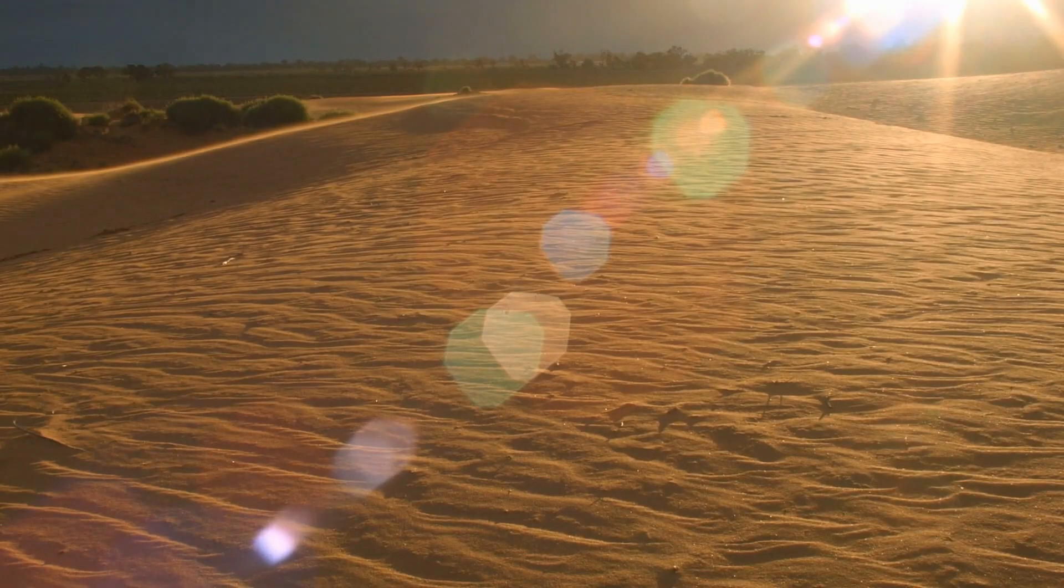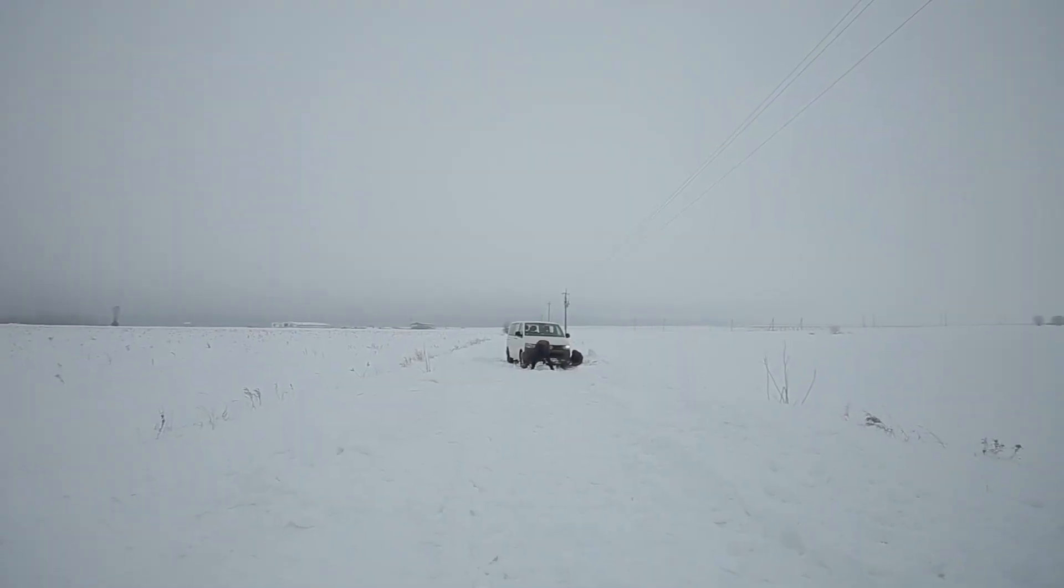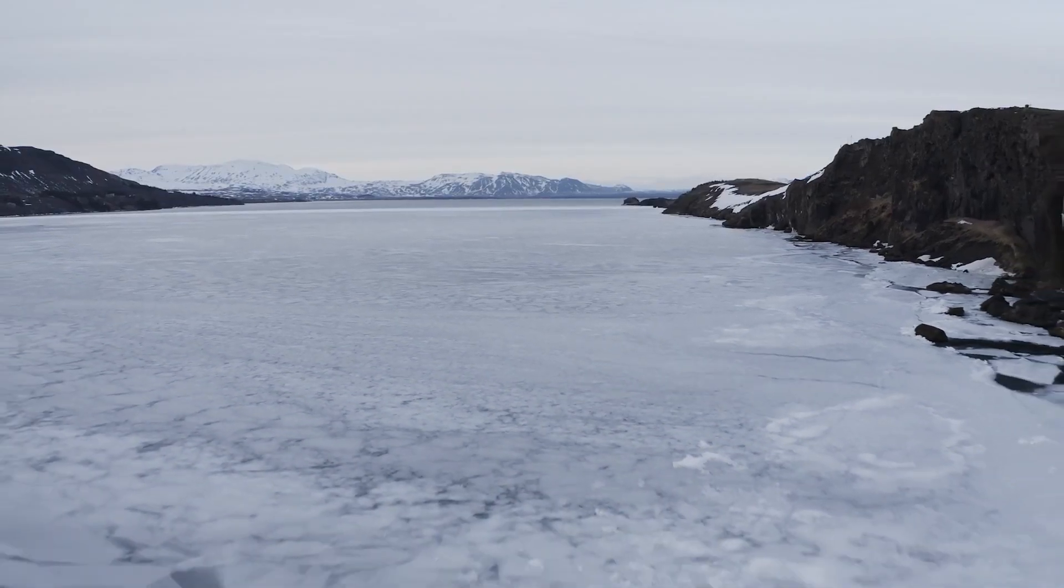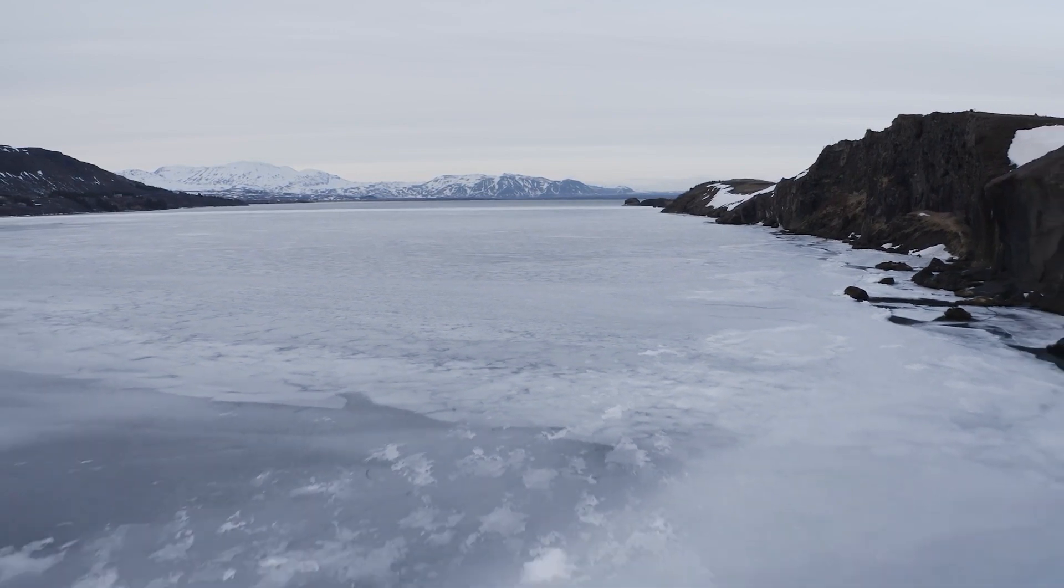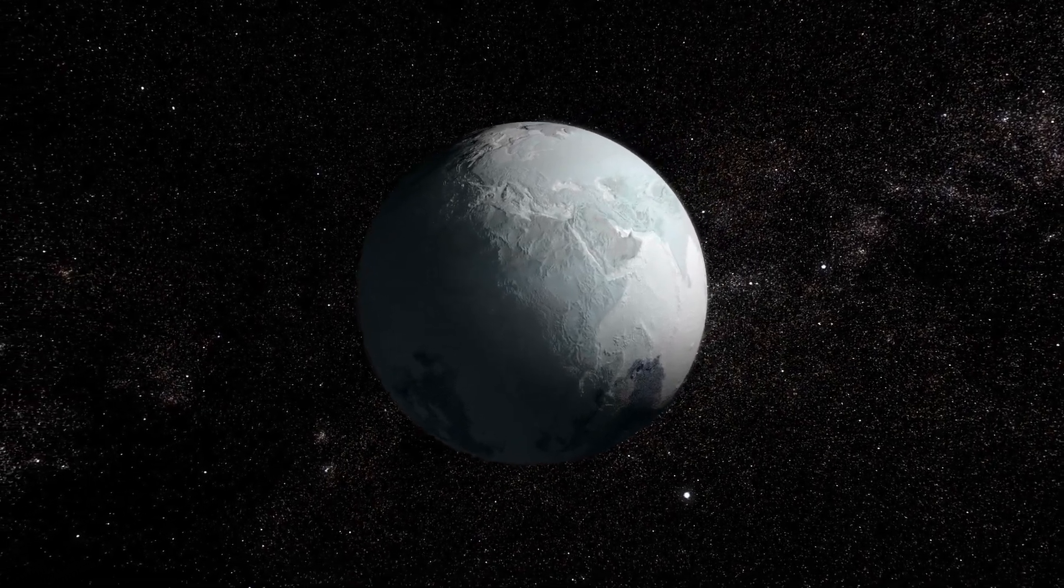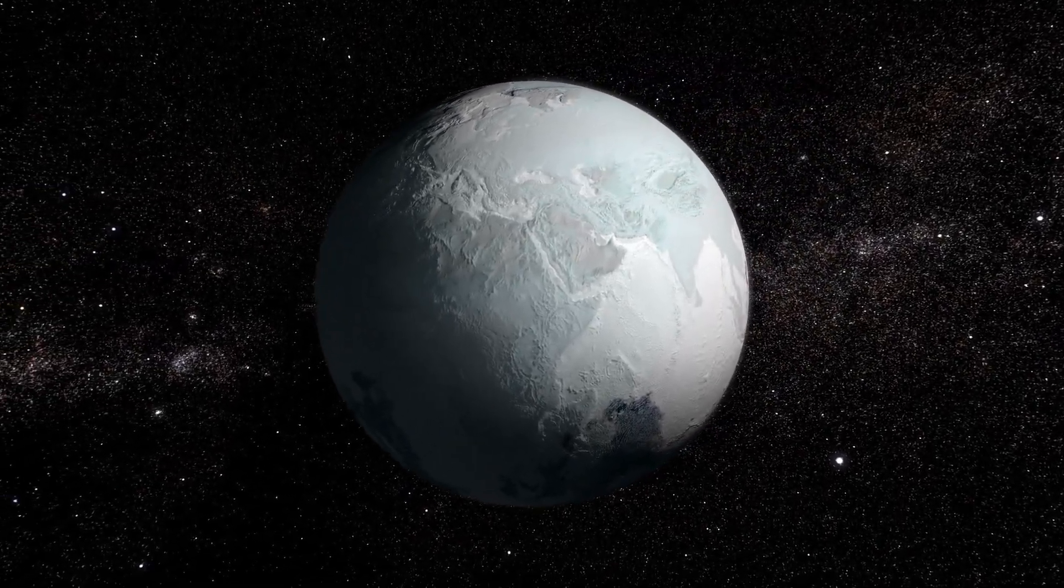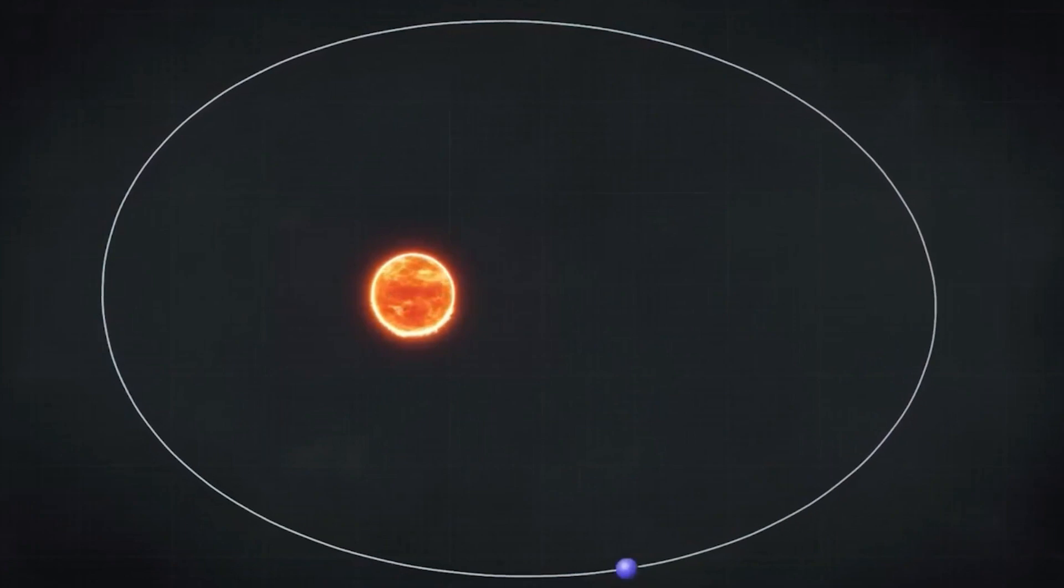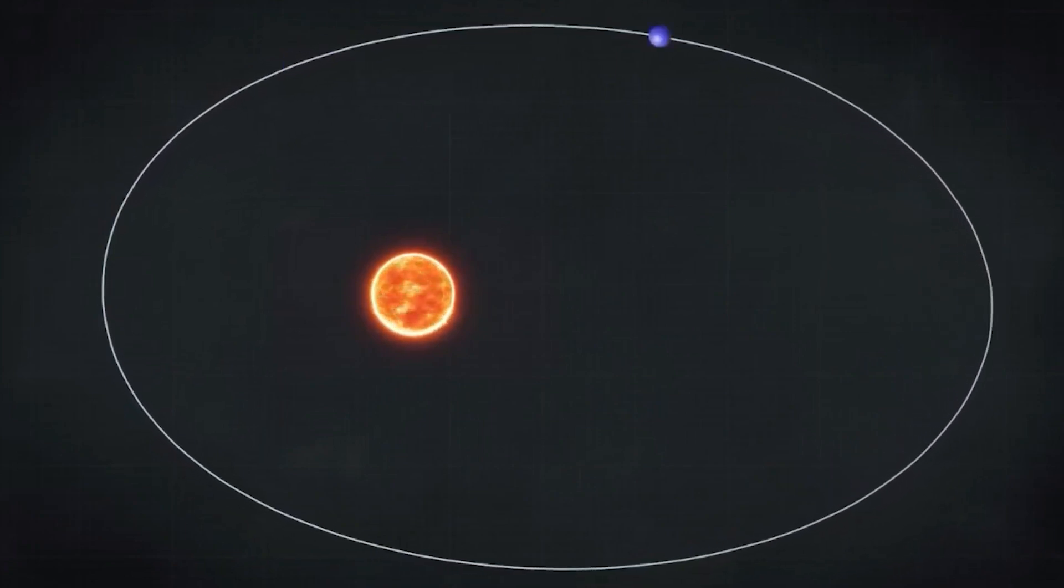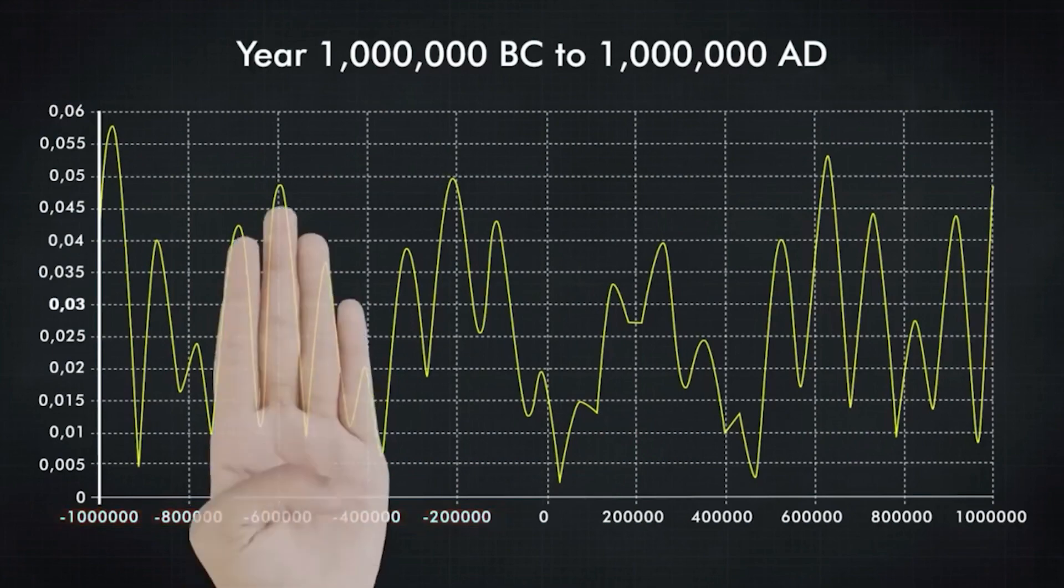During more tilted periods, the seasons on Earth get more extreme, as each hemisphere receives more sunlight in summer when tilted toward the sun and less in winter when tilted away. Over time, the longer winters lead to the expansion of polar ice caps and continental ice sheets. At the peak of ice ages, most of Earth's land could be covered in ice, turning the planet into an inhospitable snowball. These swings of tilt happen about every 40,000 years.